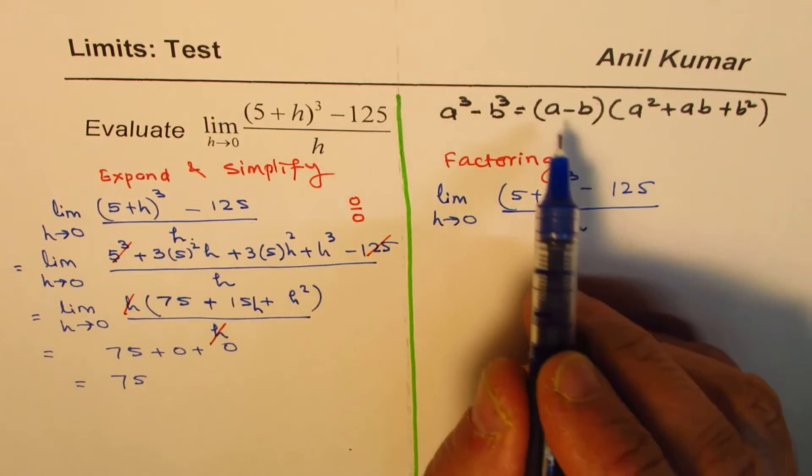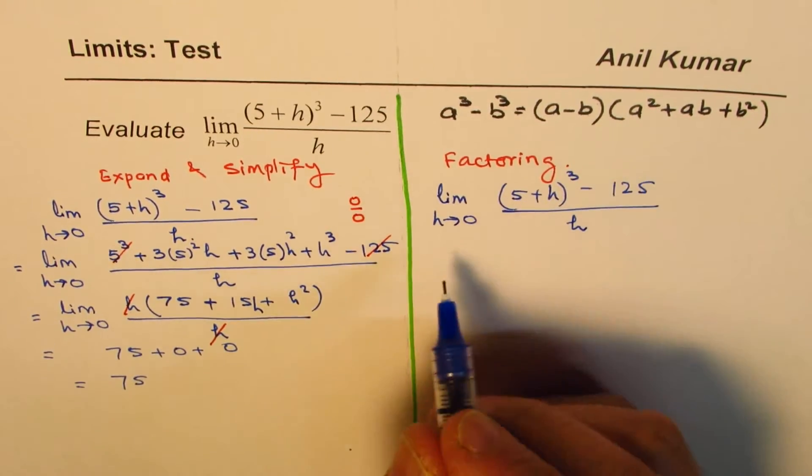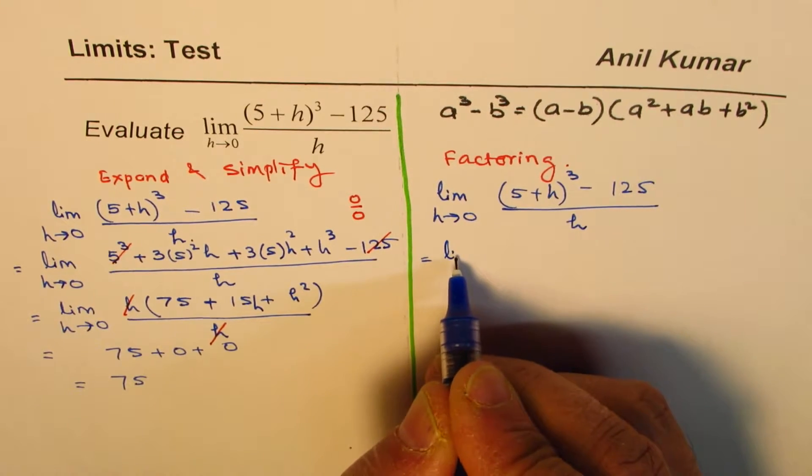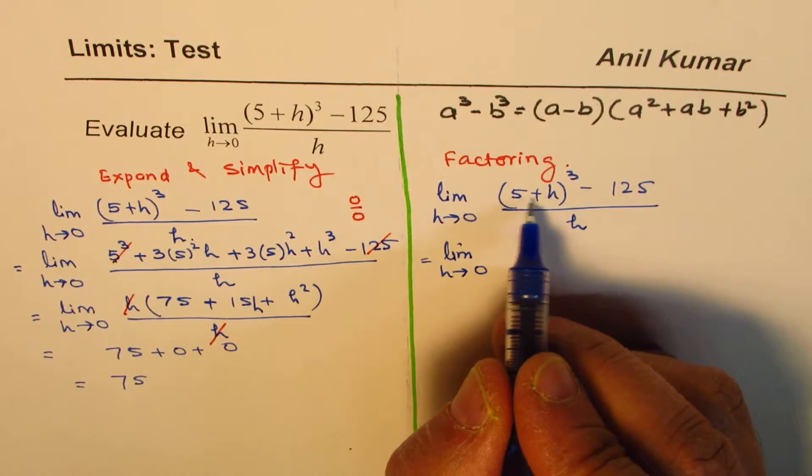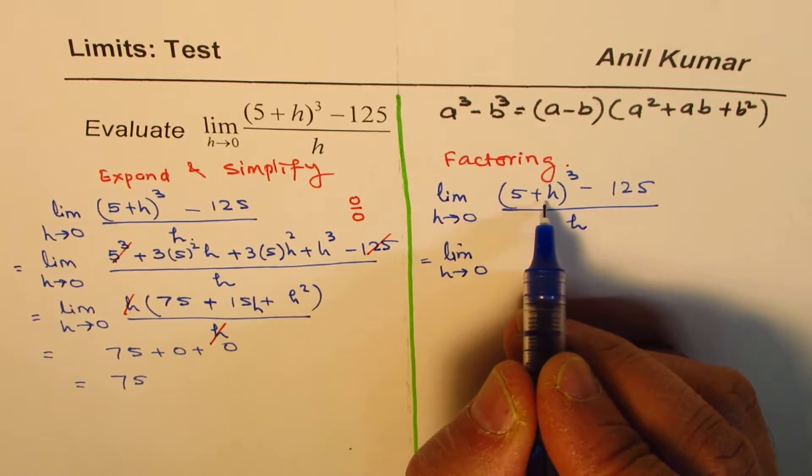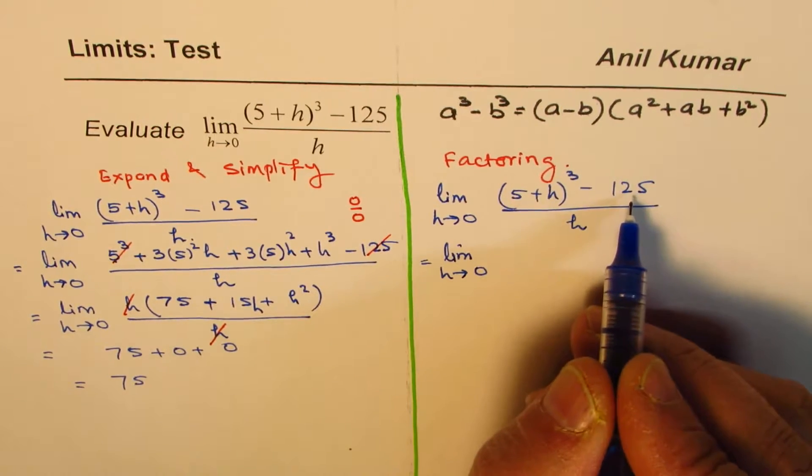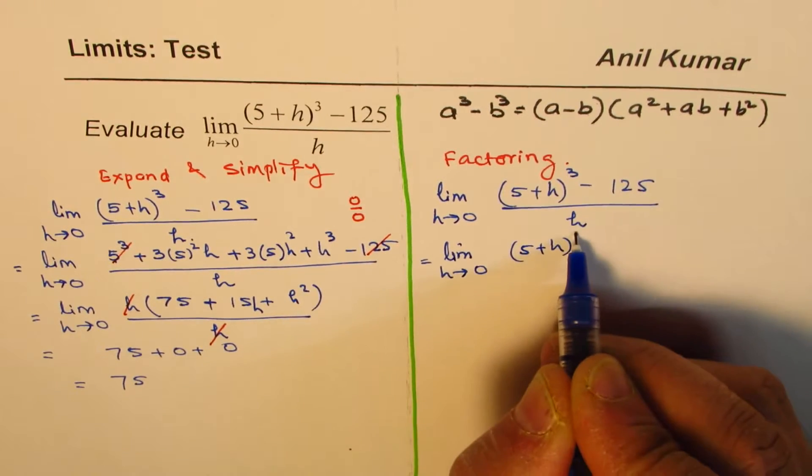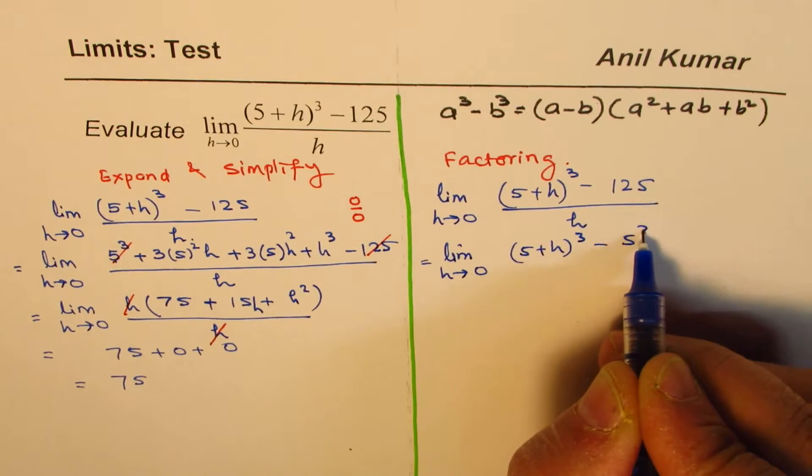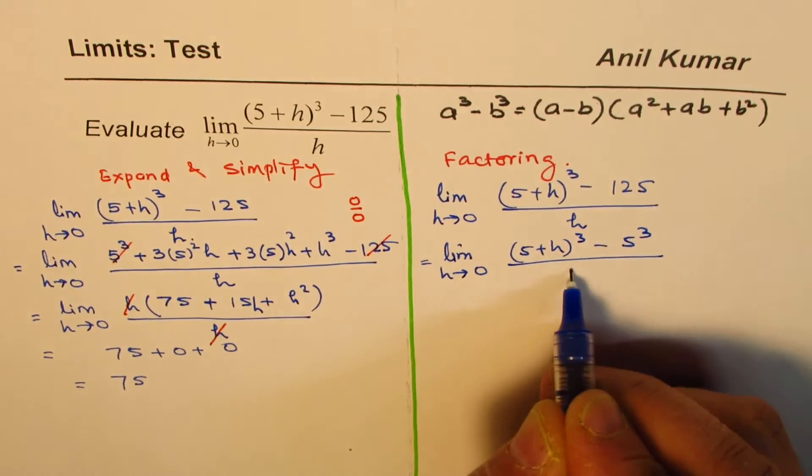Apply this formula. A cube minus b cube is a minus b times a square plus ab plus b square. So, we could write this as limit h approaches 0. Now, this is, the whole thing is a, right? So, we could a minus b. Let me rewrite this as 5 plus h whole cube minus 5 cube. 125 is 5 cube, right? Okay.